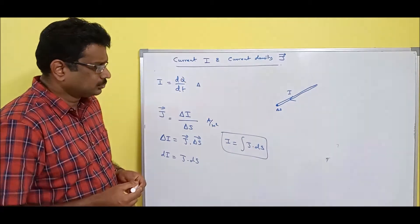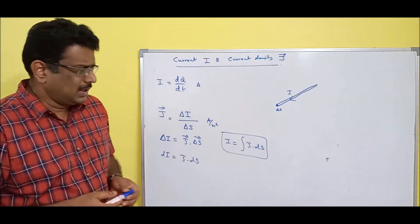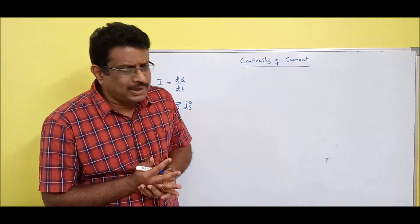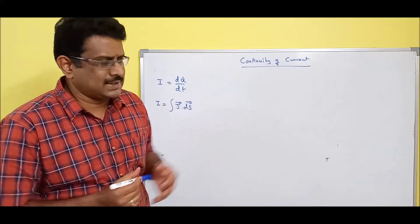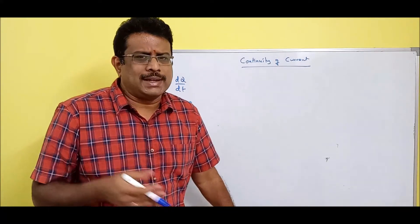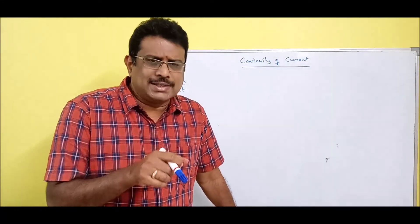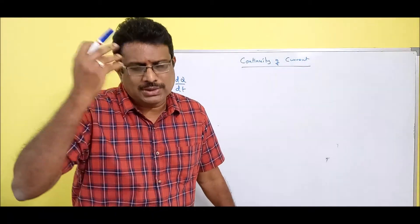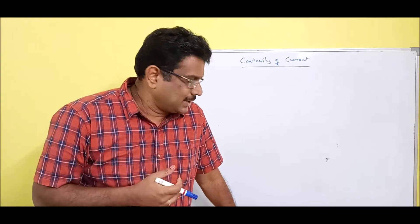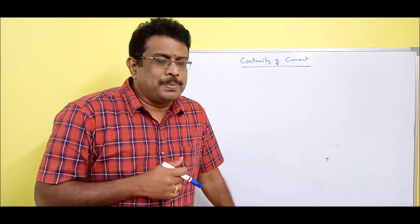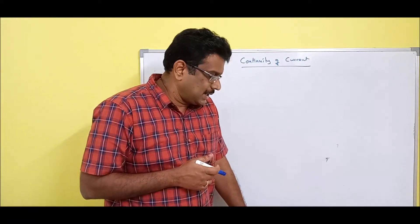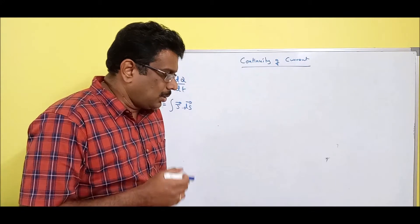I have defined current and current density. The last topic in this module is the current continuity equation, or continuity of current. From the general principle: energy can neither be created nor be destroyed. Charge is also energy — you can't create a charge or destroy a charge. So from the principle of conservation of charge: charge can neither be created nor be destroyed.